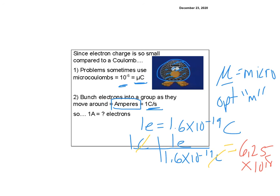Which means, the answer to this question, right here, is there are 6.25 times 10 to the 18th electrons in one amp. That's a lot of electrons. That's it.